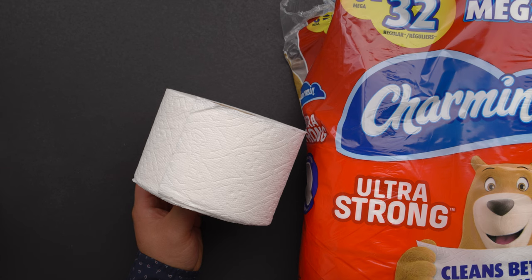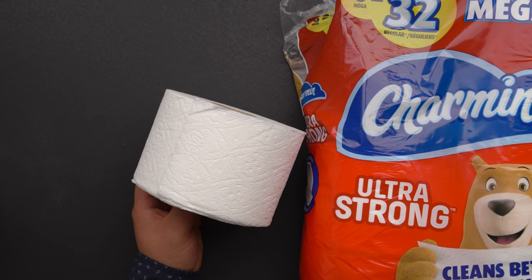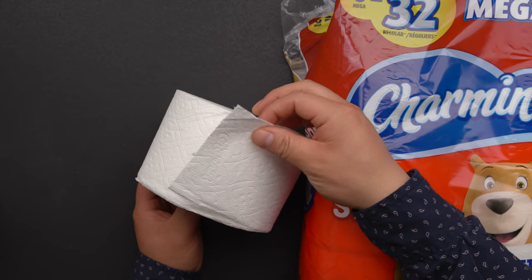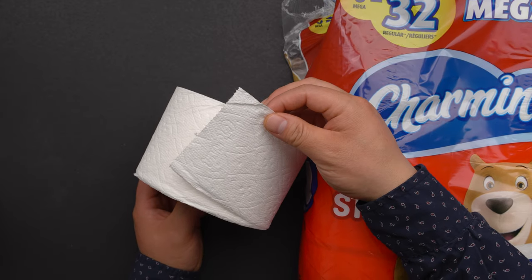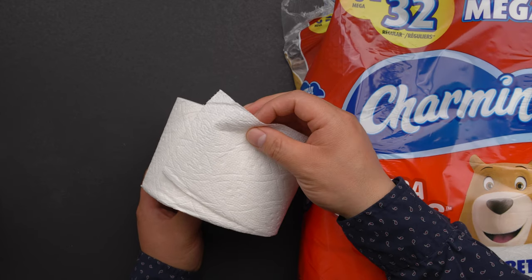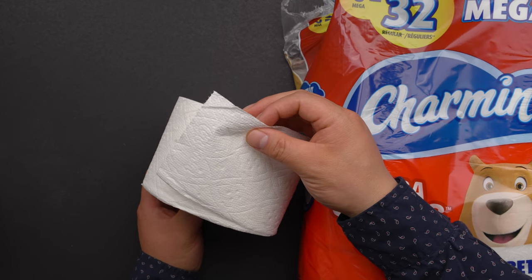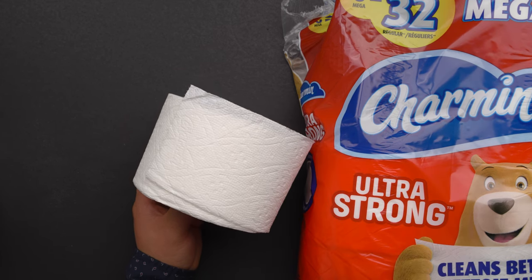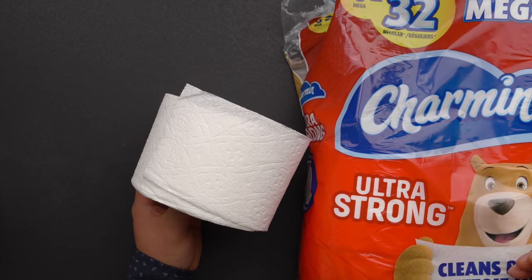In my opinion, the Charmin Ultra Strong toilet paper is good. It's thick and it's soft, it's very gentle on the skin. And if it flushes into the sewage pipe, it's not going to block the pipe. All right, I hope this video is helpful. Thank you for watching.